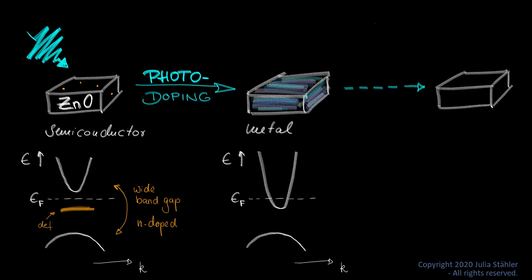It therefore shows defect states just below the Fermi energy. You will see in a moment that when transforming zinc oxide to a metal, we observe a parabolic band that crosses the Fermi energy.